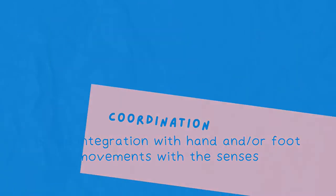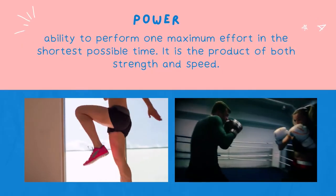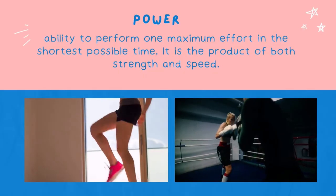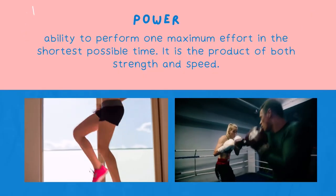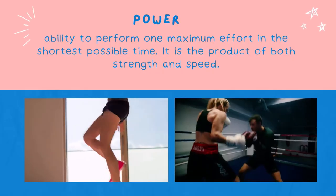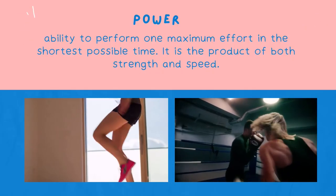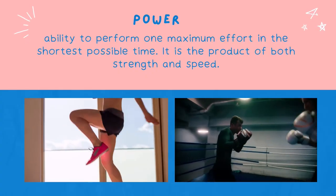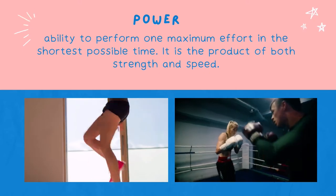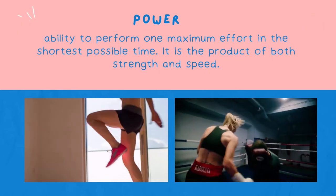Another component is muscular power, or simply power. It is the ability to perform one maximum effort in the shortest possible time — a product of both strength and speed, meaning the use of strength in a short period of time. One of the best examples of power is boxing, when a boxer hits their opponent.